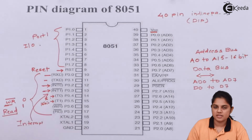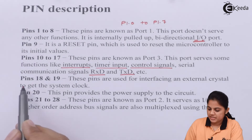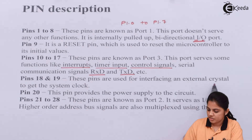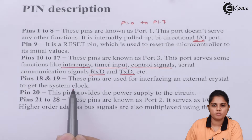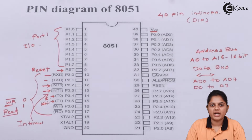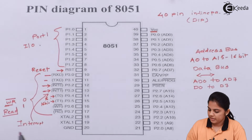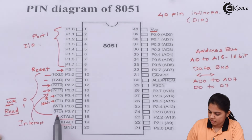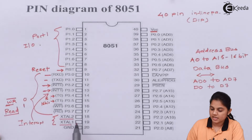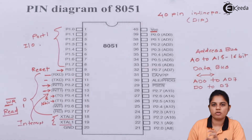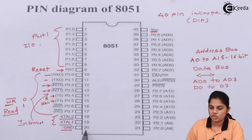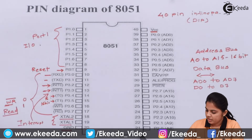Pins 18 and 19 are used for interfacing an external crystal to get the system clock, although there is an internal crystal oscillator. These are XTAL1 and XTAL2, pin numbers 18 and 19, used to connect an external clock if required. Pin number 20 should be grounded — connected to the ground potential.